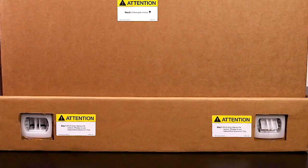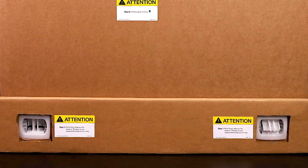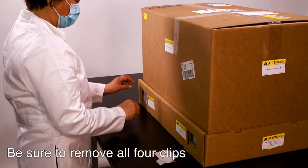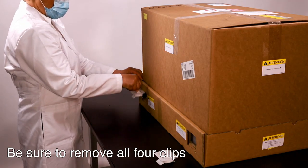There are four clips, two on each side which secure the top of the box to the base. Locate the clips near the bottom edge of the box, remove them by pinching each clip and pulling it out.